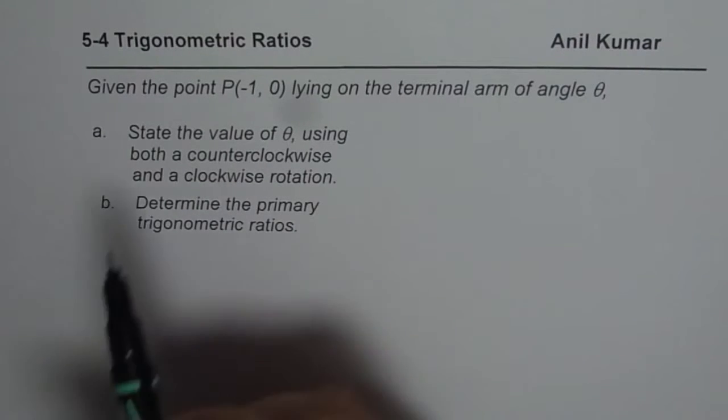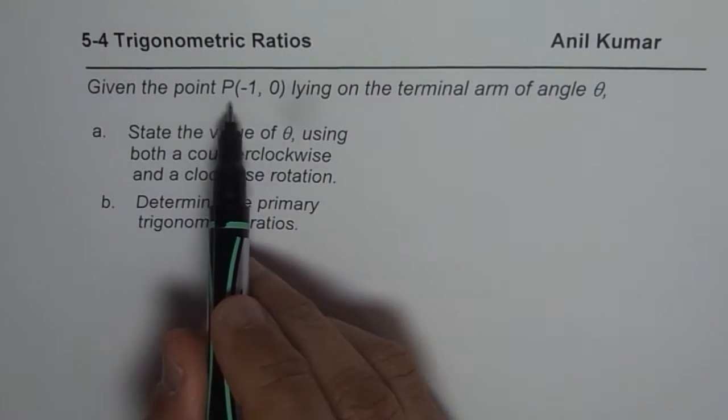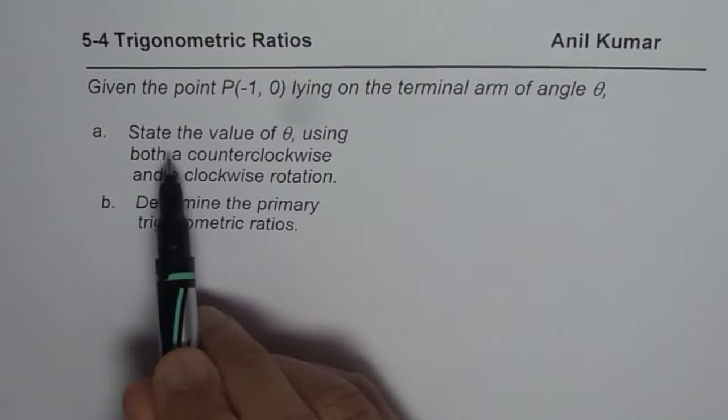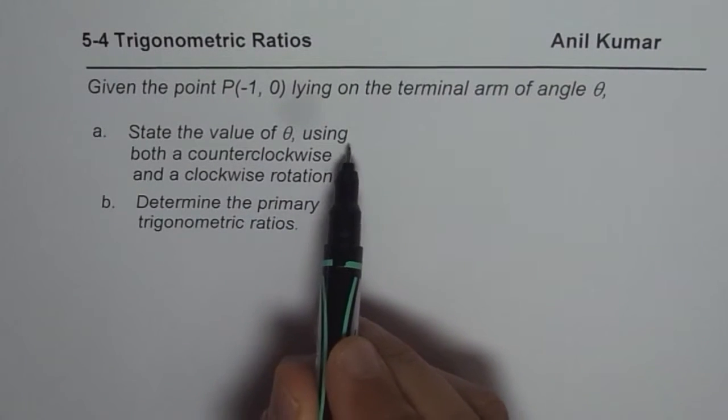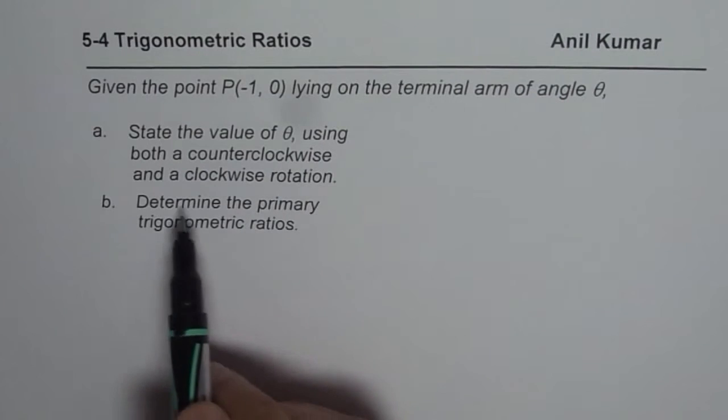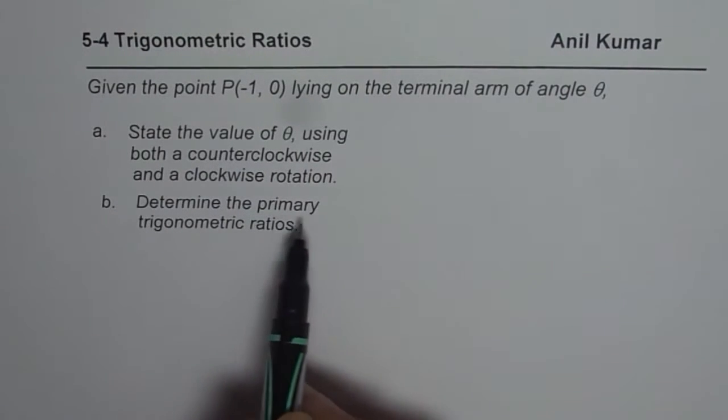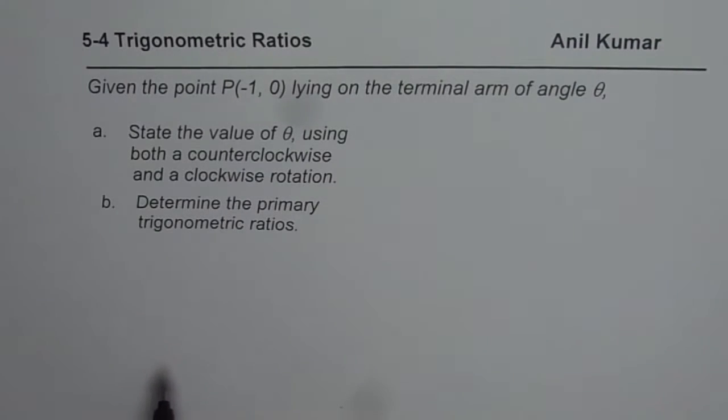The question here is, given the point P(-1, 0) lying on the terminal arm of angle theta, state the value of theta using both a counterclockwise and a clockwise rotation, and part B is determine the primary trigonometric ratios.